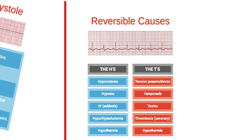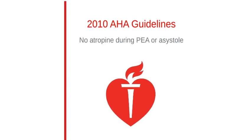The reversible causes, like the rules, are also inside your manual. Although there is no evidence that atropine has a detrimental effect during bradycardia or asystolic cardiac arrest, routine use of atropine during PEA or asystole has not been shown to have a therapeutic benefit.